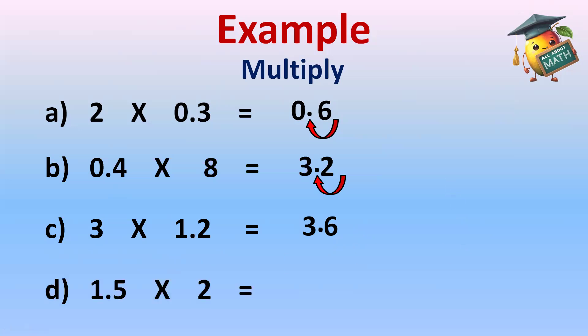Part d: 1.5 multiply 2. Remove the decimal. 15 twos are 30. In the question, there is only one decimal place because one digit after decimal. So in answer, the decimal will come after one digit. So it will be 3.0, or you can say only 3 is the answer.